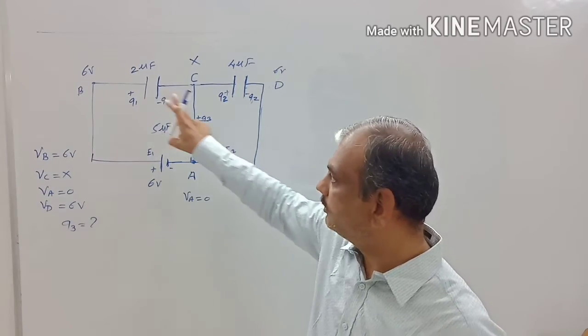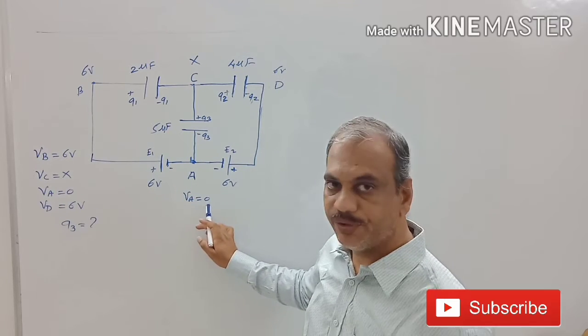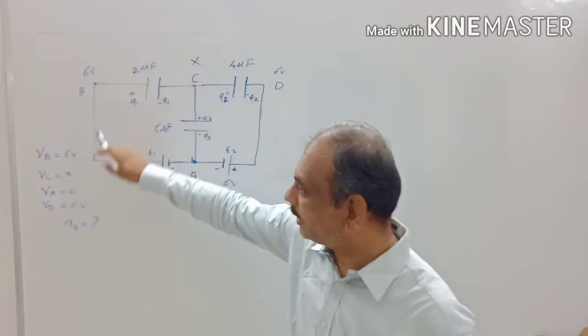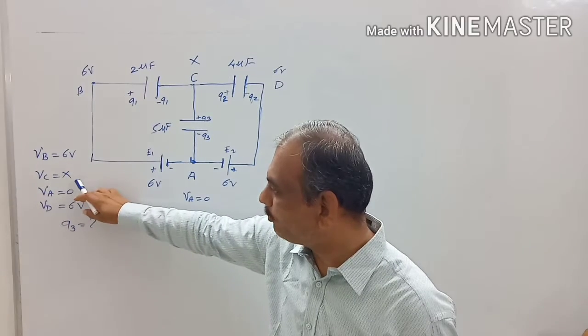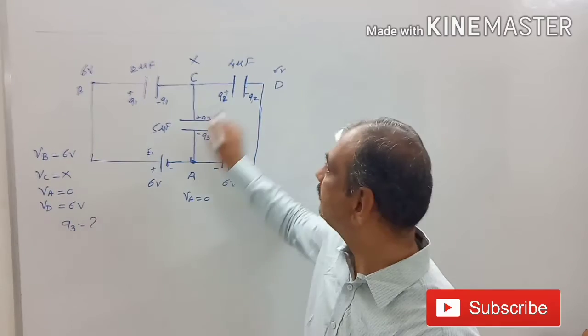At different points, the potentials are given. At point A, potential is 0. At point B, potential is 6 volt. At point C, potential is X, and at point D, potential is 6 volt.